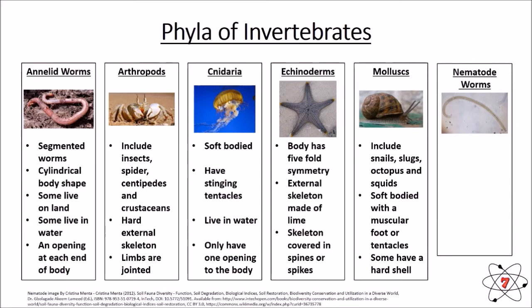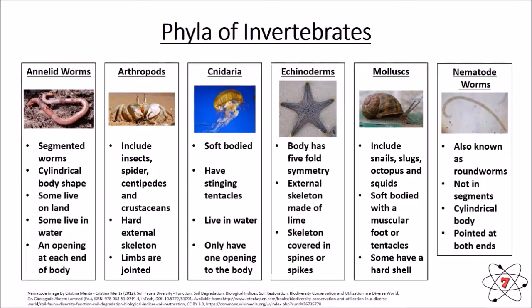Finally, we have nematode worms, also known as roundworms. Their bodies are not segmented — they are smooth. This is very different from an annelid worm that has segments in its body. A roundworm has a smooth, cylindrical body, just like an annelid worm, but it is pointed at both ends.